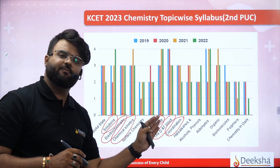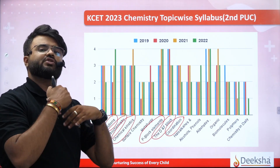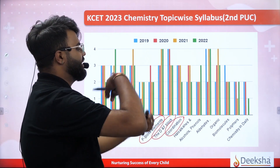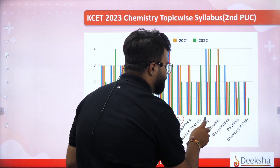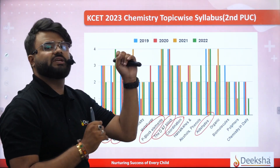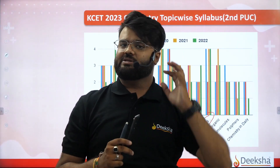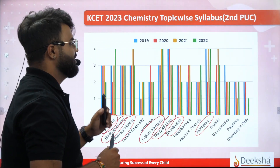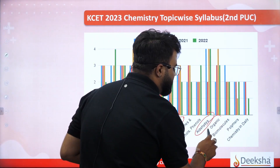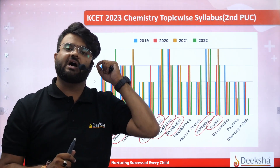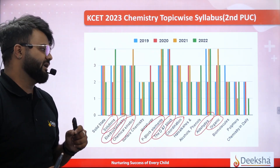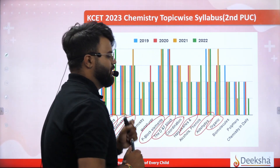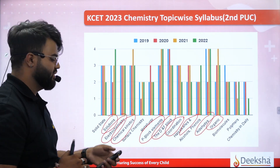D and F-block elements are made such that you can easily solve the coordination compounds also. In organic chemistry, there are great questions — great concepts, great naming reactions. That is important. Coming back to the amines chapter — organic compounds containing nitrogen — there are a lot of questions. And haloalkanes and haloarenes — this is an important chapter.